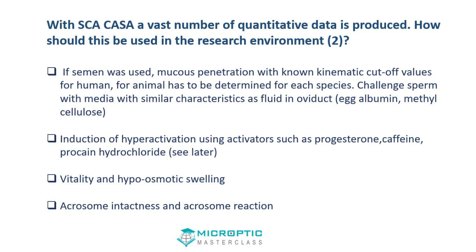Further functional studies involve mucus penetration and hyperactivation. For humans we probably have cervical barriers, but it's a big challenge to develop new methodology to challenge sperm with media having a viscosity equivalent to what is in the cervix. We can use media such as egg albumin or methyl cellulose. Hyperactivation is essential — a sperm must be able to undergo hyperactivation before it can fertilize the oocyte. In the laboratory, we can activate it with progesterone, caffeine, and procaine hydrochloride, among others. Vitality, hypoosmotic swelling, and acrosome intactness I will cover later.